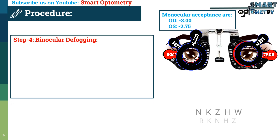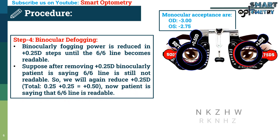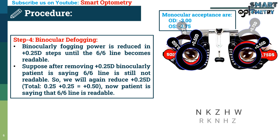Step 4 — Binocular defogging: the fogging power is reduced binocularly in plus 0.25 dioptre steps until the 6/6 line becomes readable. Suppose after removing plus 0.25 dioptre binocularly, the patient says the 6/6 line is still not readable, so we reduce another plus 0.25 dioptre, after which the patient says the 6/6 line is readable.